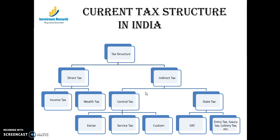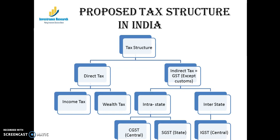In the proposed GST structure, direct taxes are unaffected. All indirect taxes will be converted into GST. Imports are still subject to customs, but other imported goods will be taxed under GST. GST is categorized into intrastate and interstate levels of supply of goods and services. Intrastate supply involves CGST (Central GST) and SGST (State GST), while interstate supply involves IGST (Integrated GST), which is entirely central.